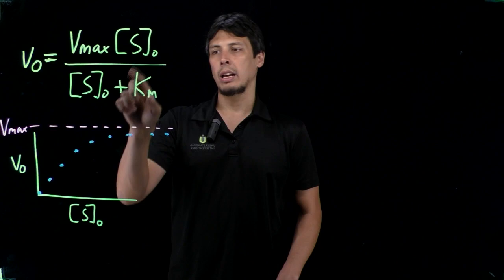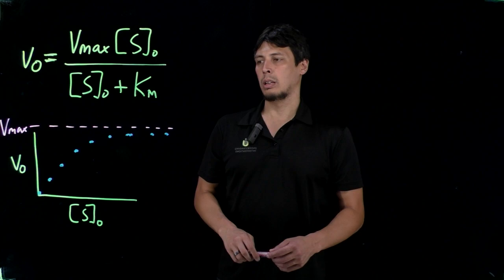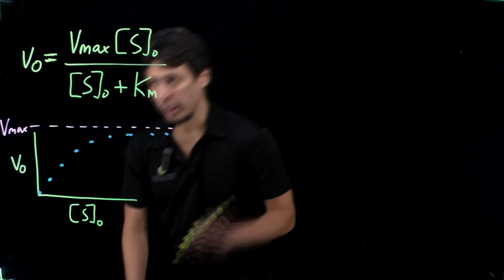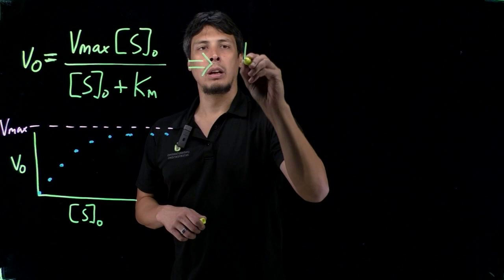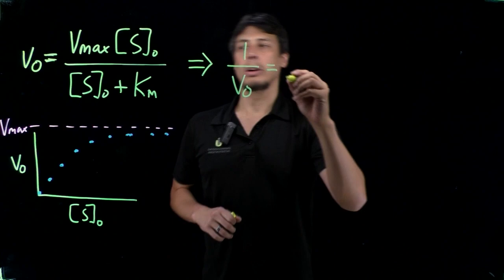What if we need to linearize this? The way to linearize this equation is to first invert both the left and right hand sides. Take the inverse of V-naught, which will be one over V-naught, and then take the inverse of the right hand side of the equation, which will flip the numerator and the denominator.